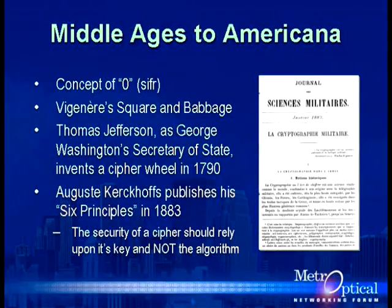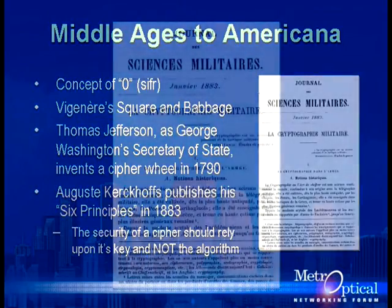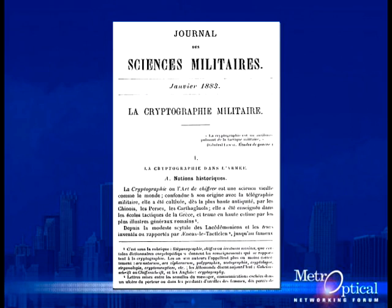Thomas Jefferson built an encryption system out of 26 wooden wheels to keep America's first secrets secret. One of the reasons that the Advanced Encryption Standard is available to us today as C source code stems from an article on military cryptography published by Auguste Kirchhoff in 1883. Kirchhoff outlines his six principles, including that the security of a good cipher should rely upon the security of the key, not the algorithm — meaning the algorithm could safely survive falling into the hands of the enemy or the public domain.